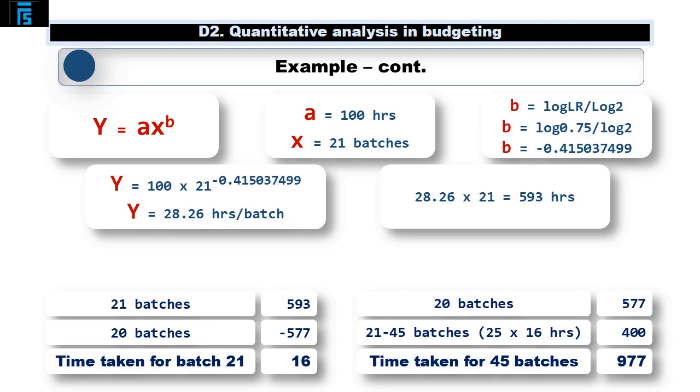To extend this further we can also work out the total time taken to make, say, 45 batches. We know from our previous calculation that the total cumulative time to make 20 batches is 577 hours, and we also know that every batch from 21 onwards will be budgeted to take 16 hours. So if we add together the 577 hours and 25 batches at 16 hours per batch, we get a total time for 45 batches of 977 hours.